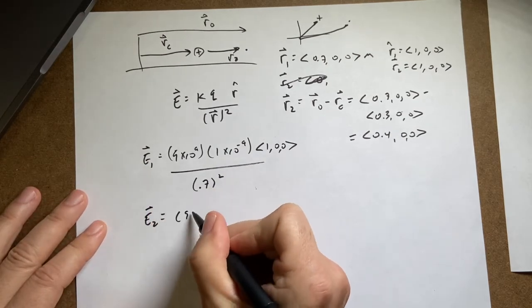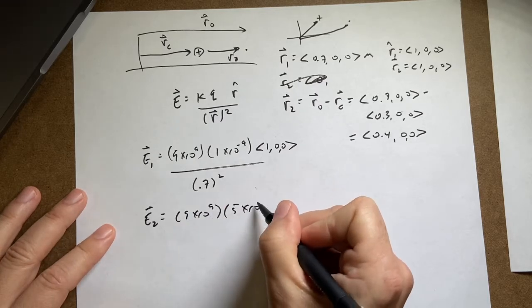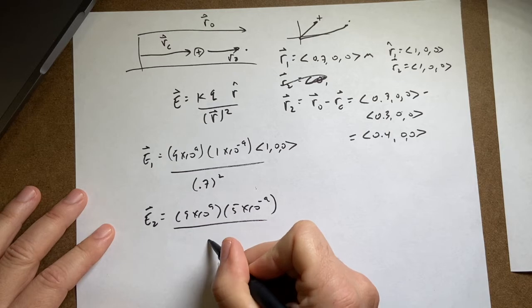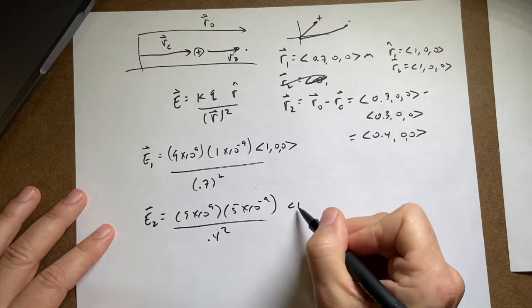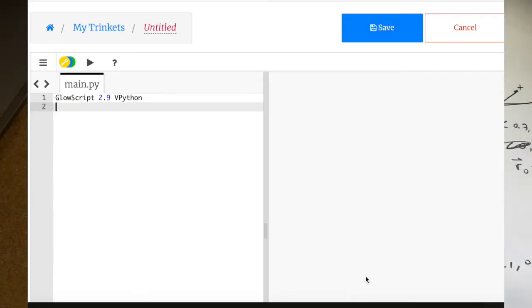And I'm going to do this in Python the correct way. And then E2 would be 9 times 10 to the 9th times 5 times 10 to the negative 9th over 0.4 squared, 1, 0, 0. And then I'll add those two together. Okay. Let's switch over to Python here.